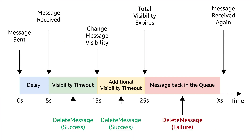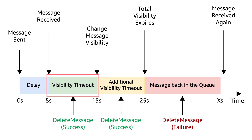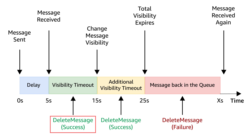When a message is in flight — that is, received by a consumer for processing — the receipt handle can be used to delete it. In this illustration, the queue has a delay of five seconds. After this, a message is received by the consumer. This consumer has a 10-second visibility timeout, that is until the 15-second mark on the figure, to process this message. If the message is deleted within this visibility timeout, then the delete message API is successful.